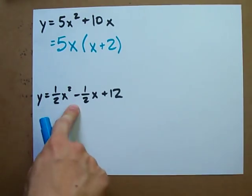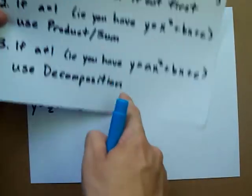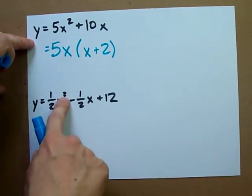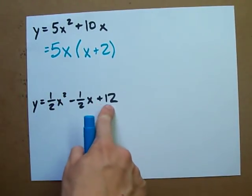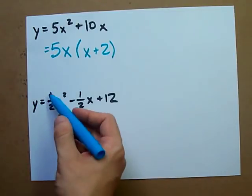Finally, let's do this one. Is there a common factor among all the terms? 1 half x squared minus 1 half x plus 12. Let's see.